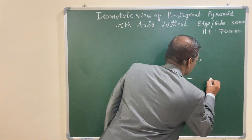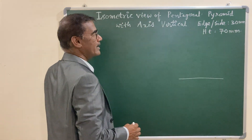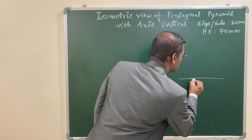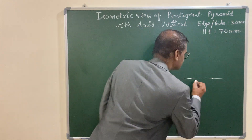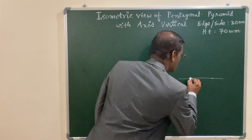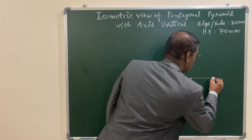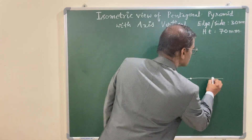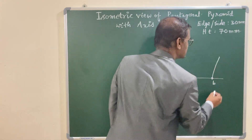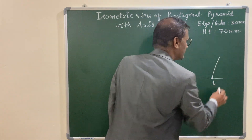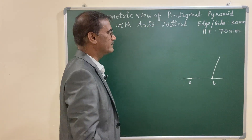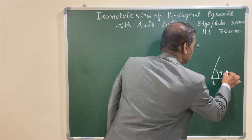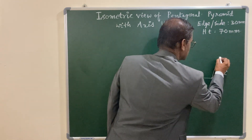Draw a line of length 50 mm and within this mark a 30 mm length. Call these points A and B. From the outer points, measure 72 degrees — as you know, 360 divided by 5 edges gives 72 degrees — and locate the point that is 30 mm away.